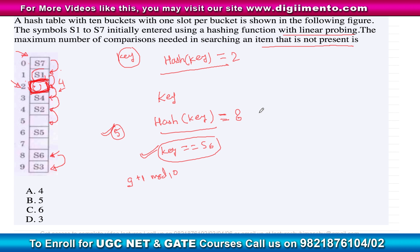Let's verify by trying other starting positions. If the hash function gives position 0, we compare at slots 0, 1, and then reach an empty slot — only three comparisons. If the hash gives position 3, we compare at slots 3 and 4, then reach an empty slot — only two or three comparisons. Neither of these is the maximum.